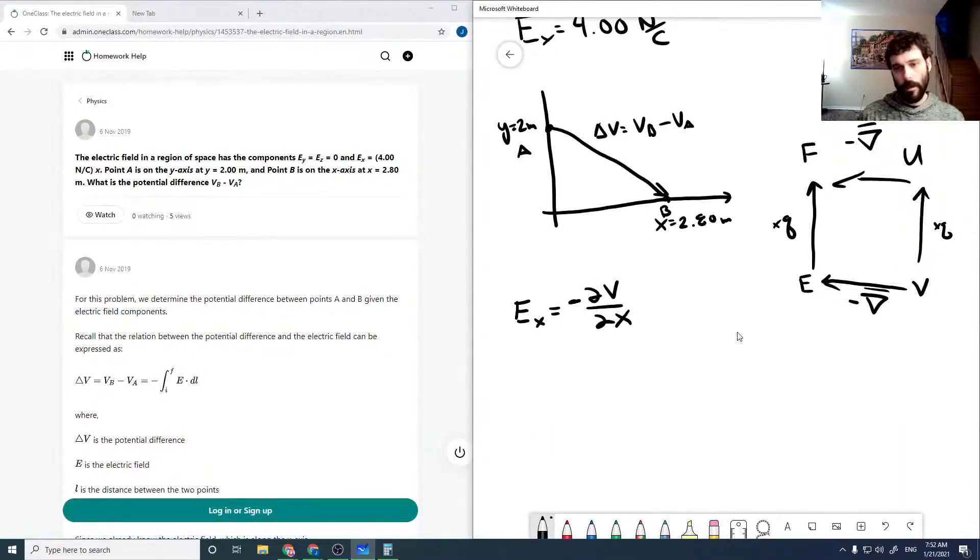So our V_A is the integral of E_A dX, which is E_X_A times X.